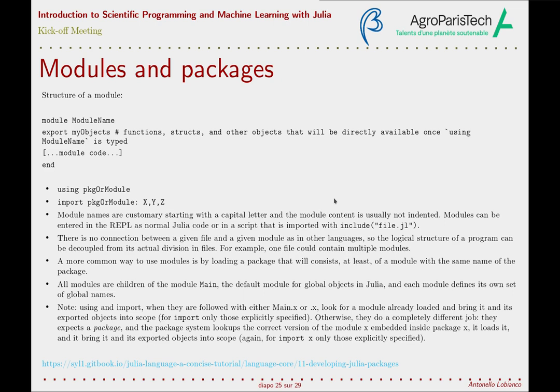To sum up: if you are developing a module locally, you are writing a module Foo in file foo.jl. You first include("foo.jl") and then use using .Foo or import .Foo: x, y, z. Or if you want to use a package, you first add this package to your environment — we'll see this in a moment — and then you type using Foo or import Foo: x, y, z without the dot.